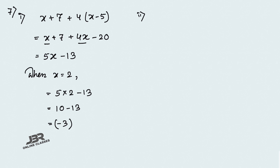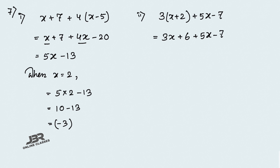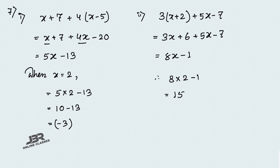Number 2: 3(x plus 2) plus 5x minus 7. Simplifying: 3x plus 6 plus 5x minus 7 equals 8x minus 1. Now put x equals 2: 8 into 2 minus 1 equals 16 minus 1 equals 15.